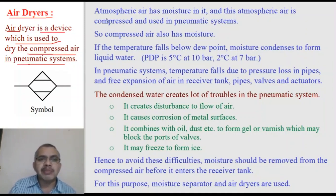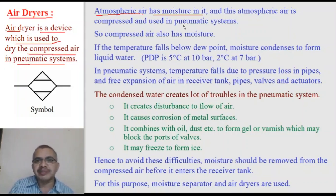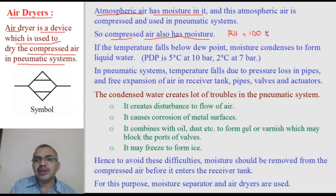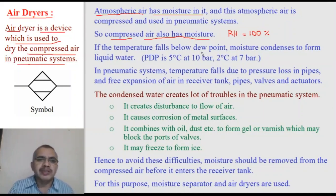The atmospheric air drawn by the compressor contains moisture. When the compressor draws that moist atmospheric air, moisture is also taken into the compressor, and hence the compressed air contains moisture. The relative humidity (RH) of compressed air is 100%, because the air is compressed and that compressed air contains more moisture — the moisture also gets compressed.